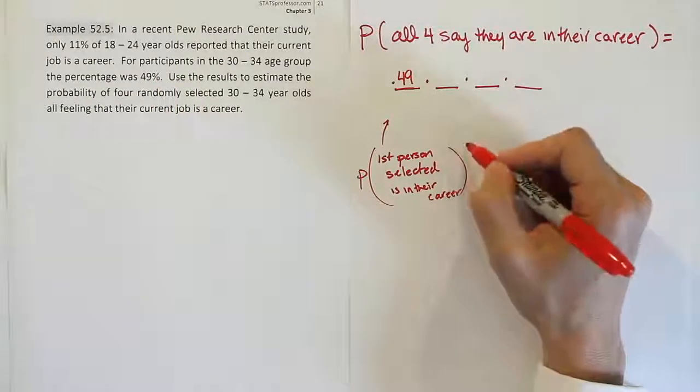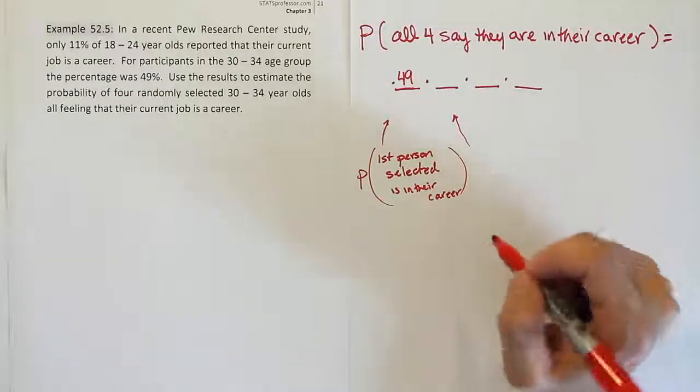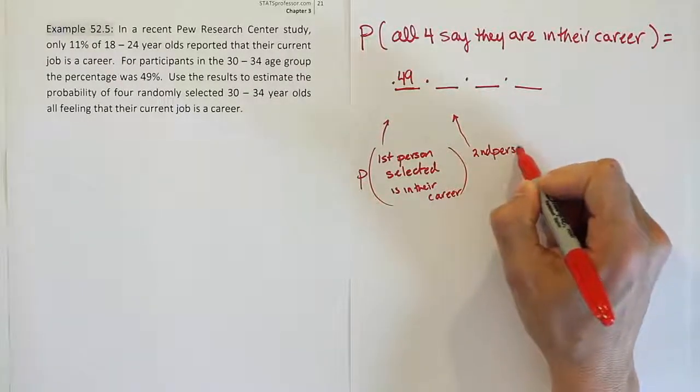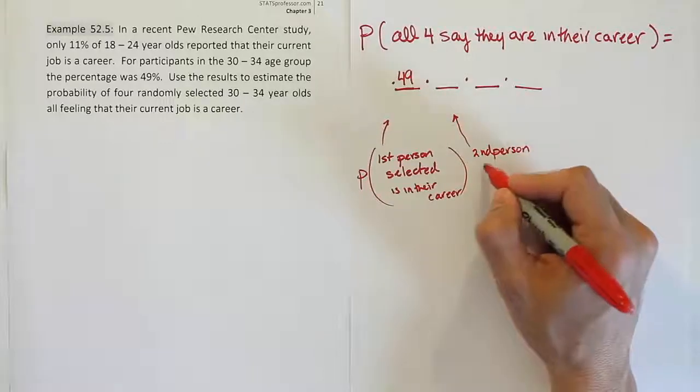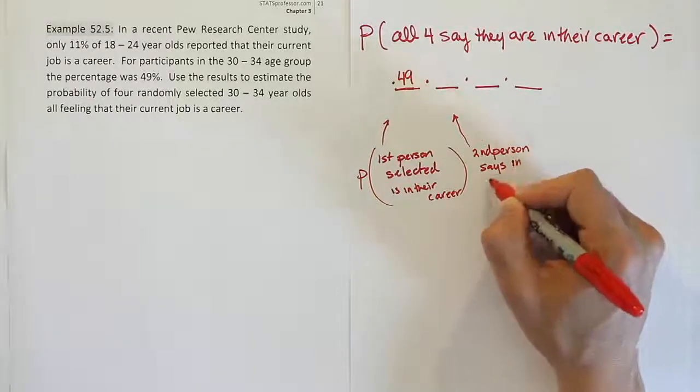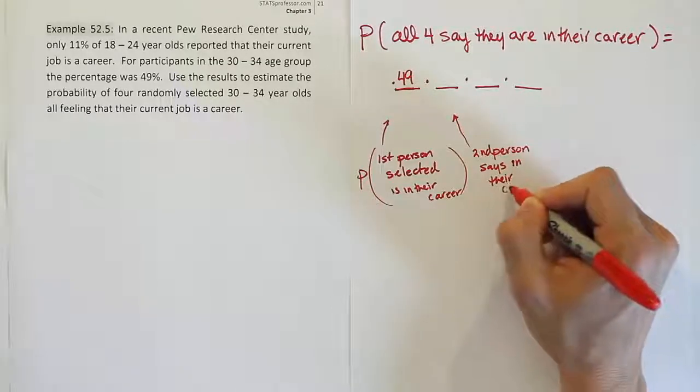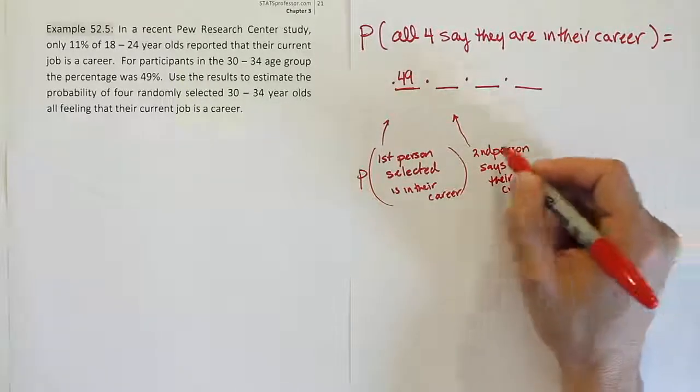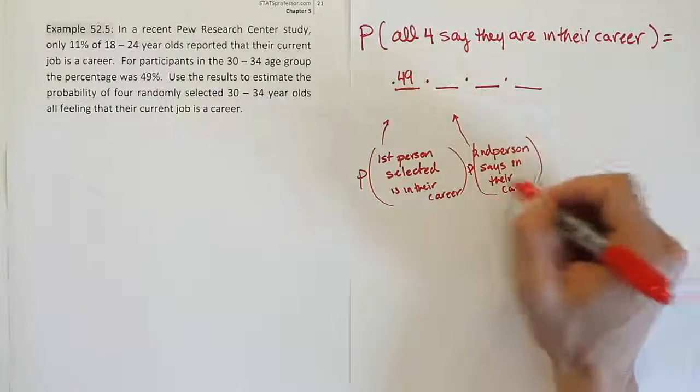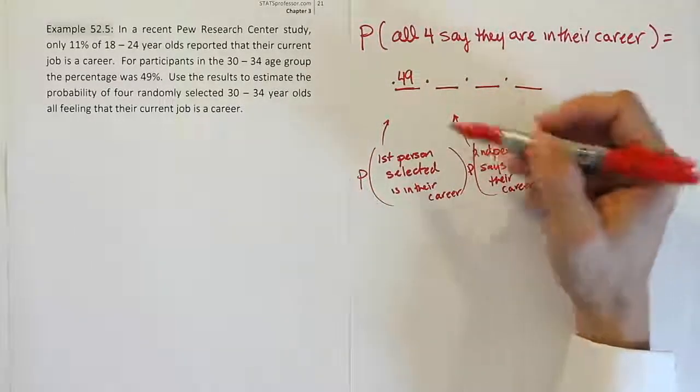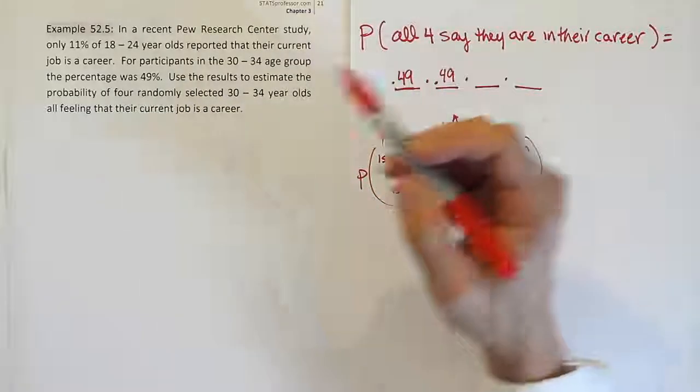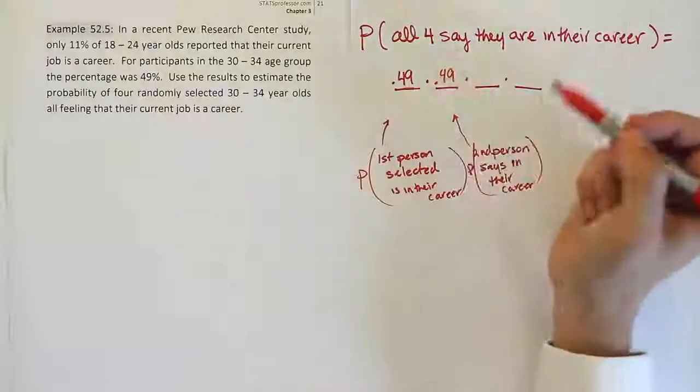Now what's the second one supposed to represent? This is the second person, and how do you want that to turn out? You want the second person to say they are in their career. Second person says they are in their career. That's again, a 49% chance because the second person is also in the 30 to 34 year old age bracket.